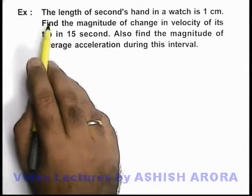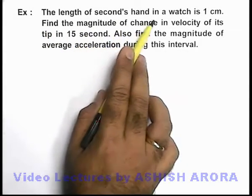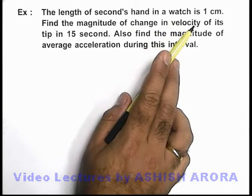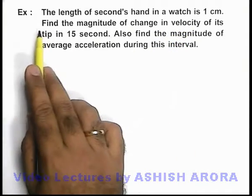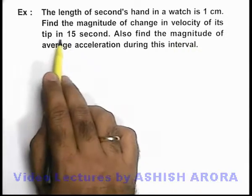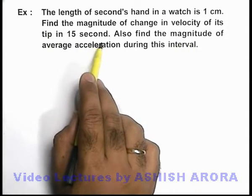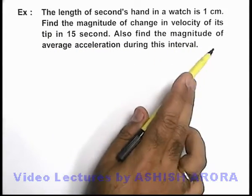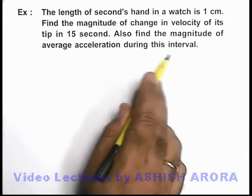In this example, we are given that the length of seconds hand in a watch is 1 centimeter. We are required to find the magnitude of change in velocity of its tip in 15 seconds. We are also required to find the magnitude of average acceleration during this interval.